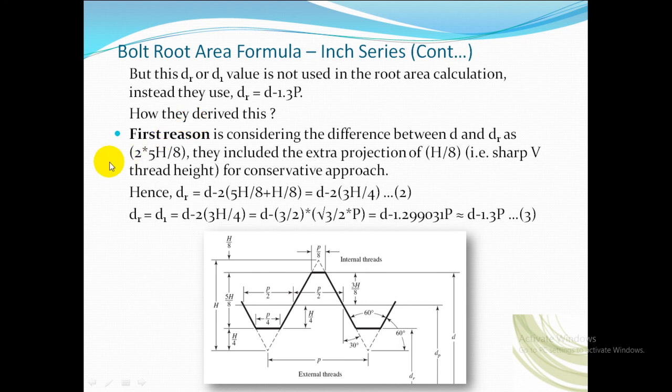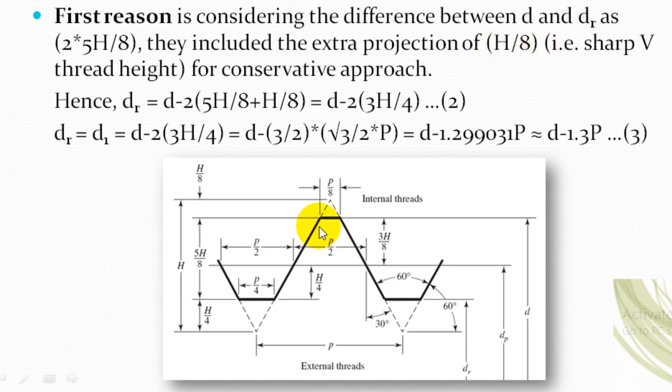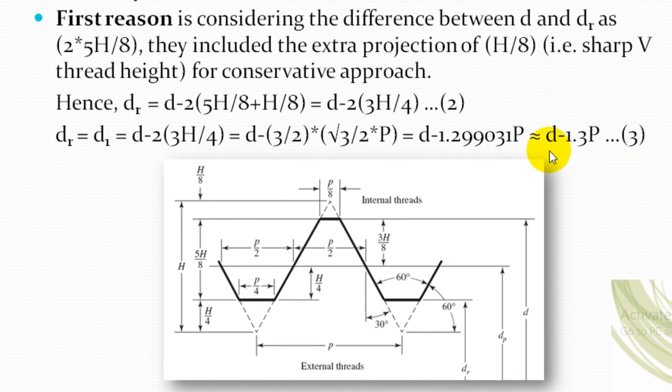After searching and referring from a lot of references, I found two reasons how it was derived. The first reason is considering the difference between d and dr as 2 times 5H by 8. They included the extra projection of H by 8, that is sharp V thread height, for conservative approach. Hence dr equals d minus 2 times (5H by 8 plus H by 8), which gives d minus 2 times 3H by 4. After solving for H, you will get dr equals d minus 1.29903 times P, which is approximately equal to d minus 1.3 times P. This is the value you will find in many references and handbooks.